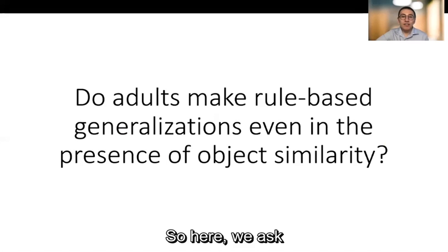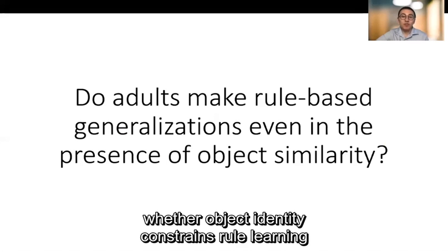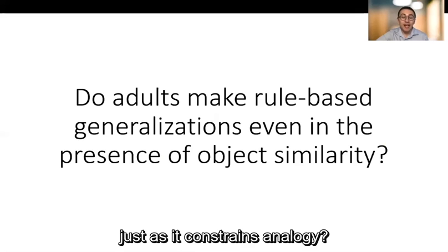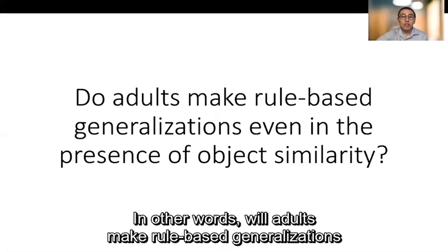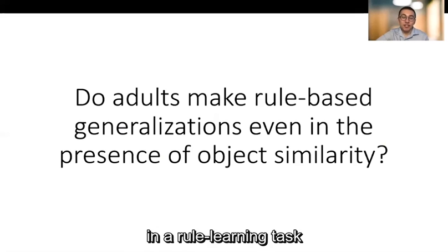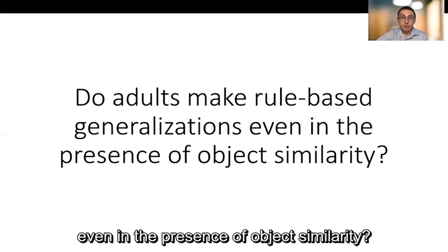So here we ask whether object identity constrains rule learning just as it constrains analogy. In other words will adults make rule-based generalizations in a rule learning task even in the presence of object similarity?